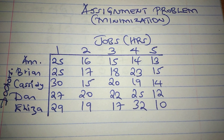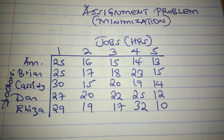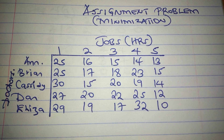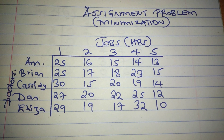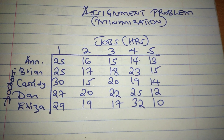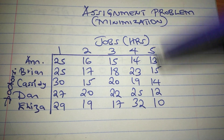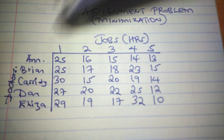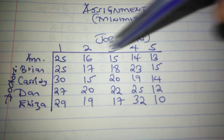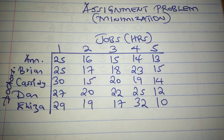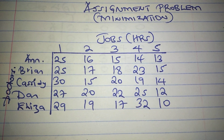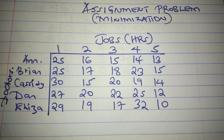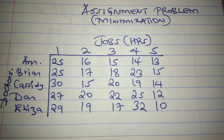The first thing is to ensure that the table is square — that is, the number of rows equals the number of columns. In this case we have five doctors and five jobs, so since the table is square, we can go ahead and use the Hungarian method to solve this question.